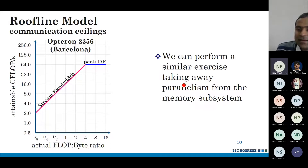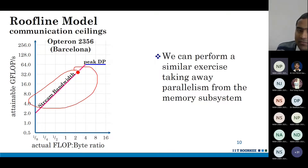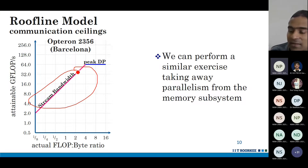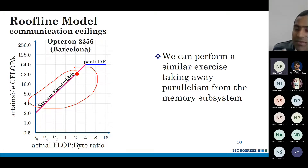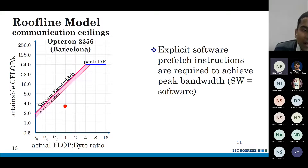We can perform a similar exercise by examining parallelism from the memory subsystem. The stream bandwidth is probably the maximum bandwidth you can get from DRAM. DRAMs provide high bandwidth only when you can leverage full parallelism — for example, row buffer locality. If your application makes random memory accesses and there is no locality, the effective bandwidth goes down. For example, if there are no explicit software prefetch instructions, you don't get the full bandwidth.